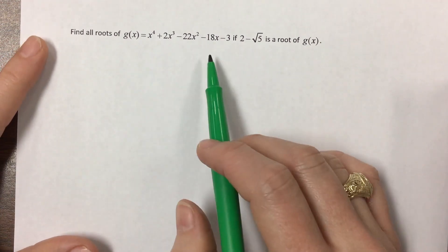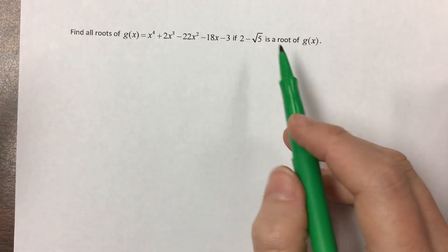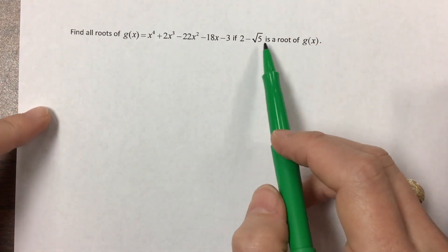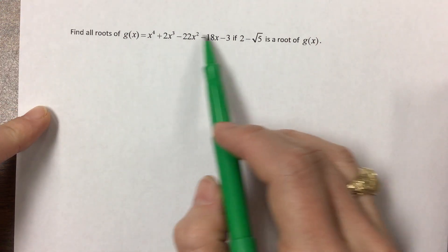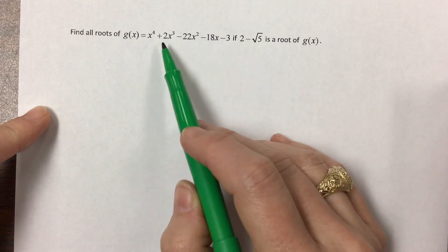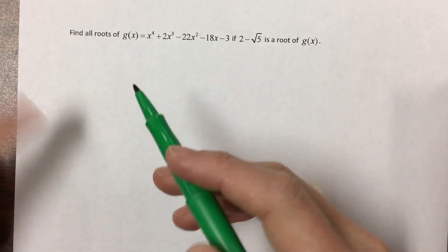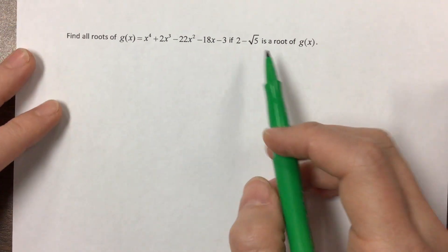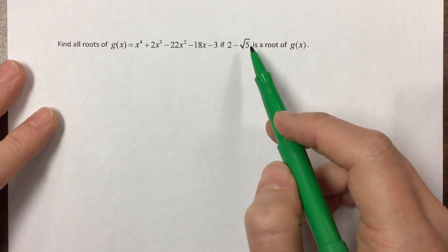They're asking us to find all the roots, and they've given us a root. Notice all of my coefficients are rational numbers — they're actually integers. And so this guy has to travel with a buddy.